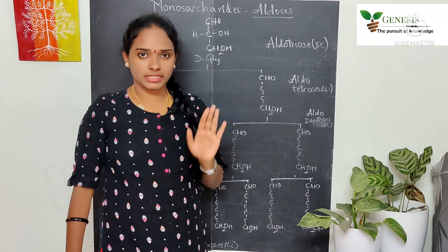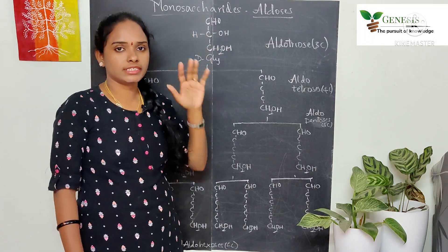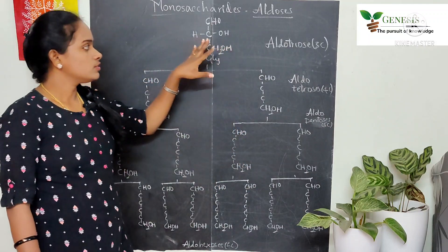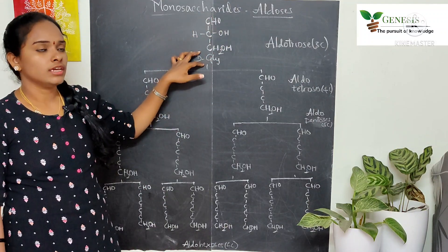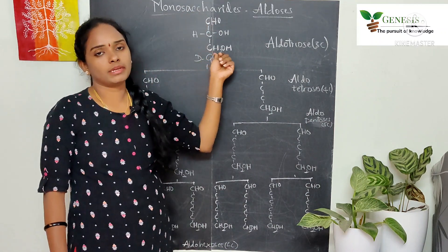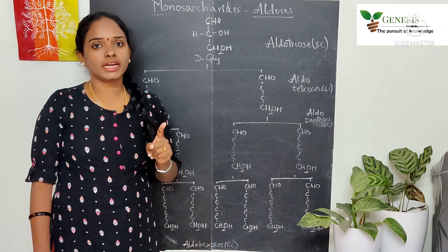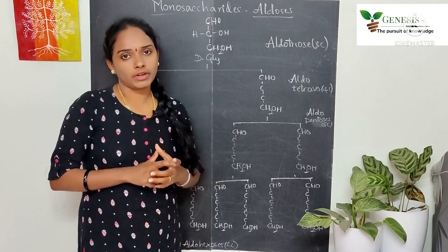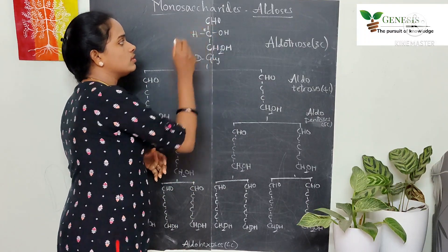While writing down the structures of aldoses, we have already discussed that glyceraldehyde — D-glyceraldehyde — is taken as the reference carbohydrate. Glyceraldehyde contains three carbon atoms and is the basic monosaccharide unit. It contains an aldehyde group as the functional group, a primary carbon atom at one end, and in the middle one chiral carbon atom. A chiral carbon is one which is attached to four different atoms or groups, also called an asymmetric carbon.